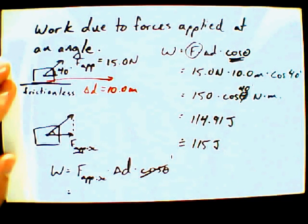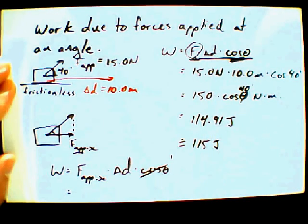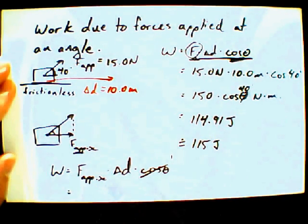You get the same answer either way, though. It depends on how you think about it, I suppose. But you're right. Saying, using these raw numbers and plugging in a cosine of theta of 40 degrees or finding f applied x and then doing your calculation, equivalent results. Okay. Okay.